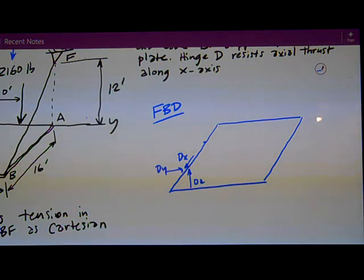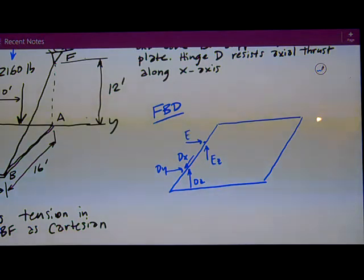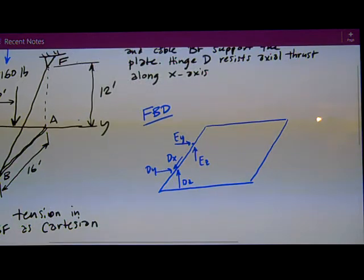At E it doesn't resist along the X-axis, so it just has an EZ and an EY. Notice how I show those in the positive directions, just to be consistent with my calculations so I can know what a negative answer means. Although I'm not dealing with those answers for those two reactions at E and D, I do want to be consistent in how I do all my free body diagrams.